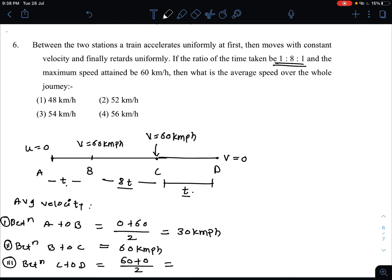We have to find out the average velocity between A to D. Average velocity is total displacement upon total time taken. You already know velocity equals displacement upon time.